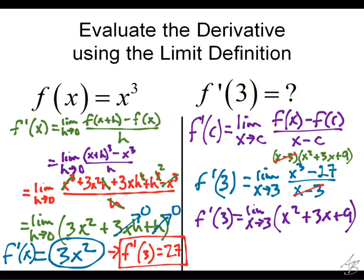Now, can I use direct substitution? Yeah. We don't have any problems here with indeterminate forms, so we put 3 in for x. We get 3 squared here is 9. 3 times 3 is 9 plus 9. 9 plus 9 plus 9 is 27. So, we get the same answer both ways.